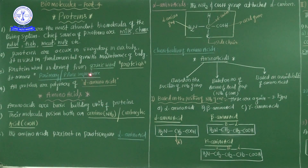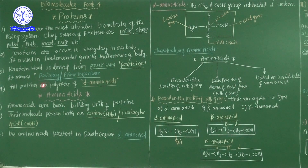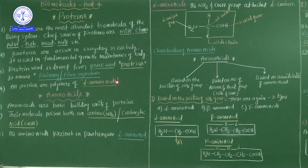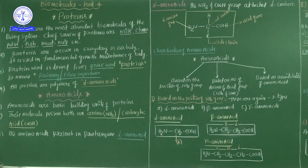That is why the word is derived from the Greek language — proteos, meaning primary or primary importance. The most important key point: all proteins are polymers of alpha amino acids. Amino acids are the basic building units of proteins. For example, hemoglobin is one protein and it contains 574 amino acids.